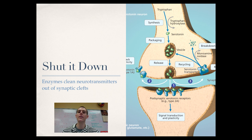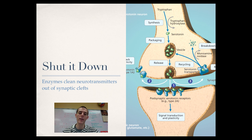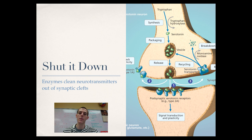You have to shut it down because if your cells were continually sending signals, your body wouldn't be able to function or communicate efficiently. All those neurotransmitters released into the synaptic cleft will keep signaling whatever ligand-gated channel they bind to as long as they're in that cleft. So when the signal needs to shut down, enzymes are released into the cleft and they break down the neurotransmitters, cleaning them out of the area. Once those neurotransmitters are cleaned out, the cells are ready to signal again across the synaptic cleft.